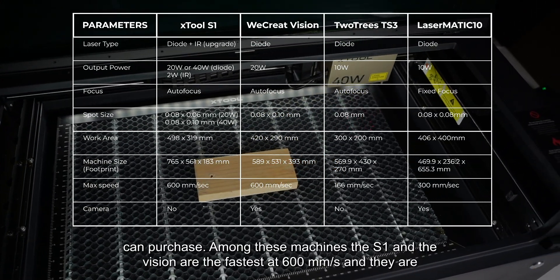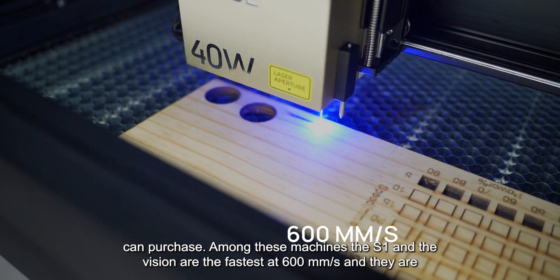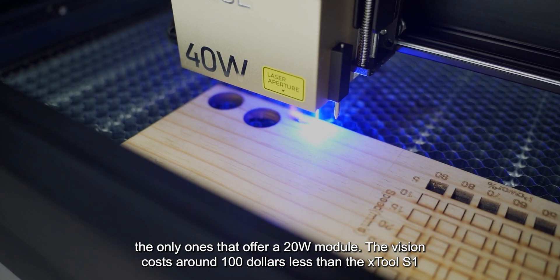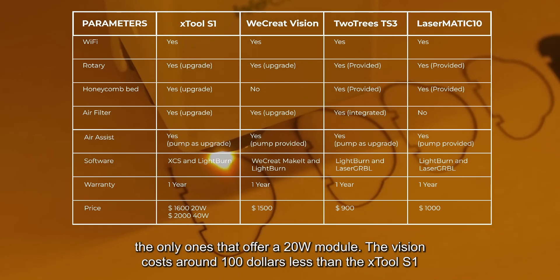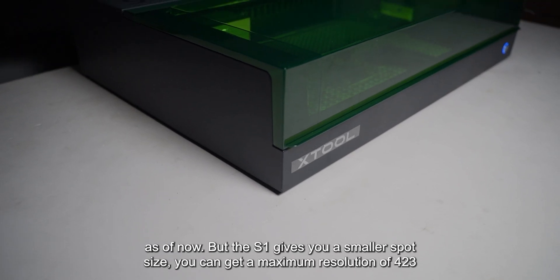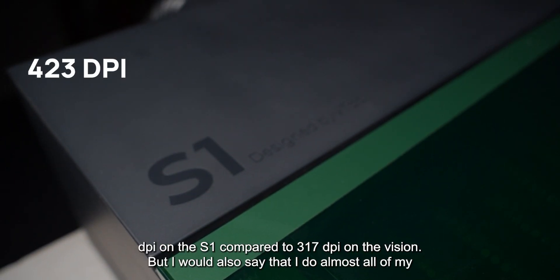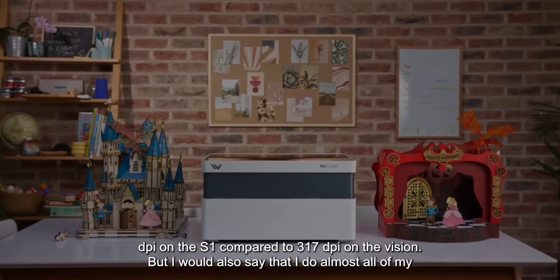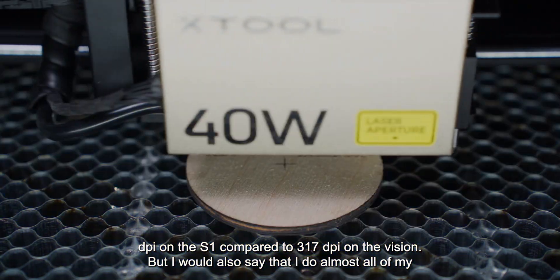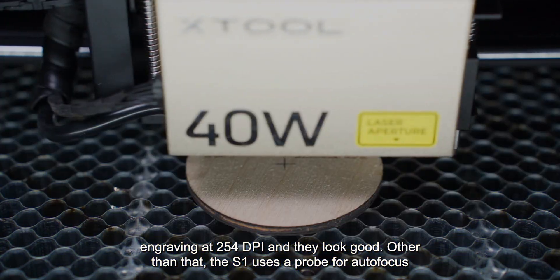Also the S1 has an infrared module upgrade you can purchase. Among these machines, the S1 and the Vision are the fastest at 600 mm per second and they are the only ones that offer a 20 watt module. The Vision costs around $100 less than the Xtool S1 as of now, but the S1 gives you a smaller spot size, you can get a maximum resolution of 423 dpi on the S1 compared to 317 dpi on the Vision.